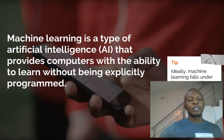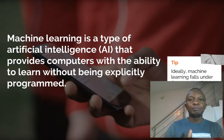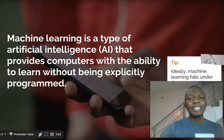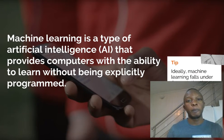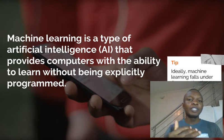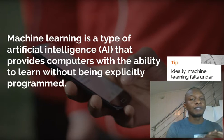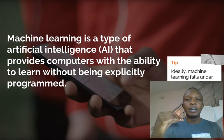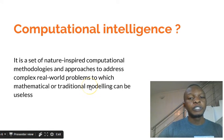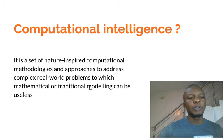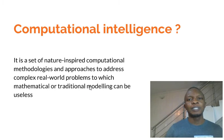The main thing to note in machine learning is that the computer reads data and understands concepts without being explicitly programmed. Machine learning is a soft field in computational intelligence, also called soft computing. Computational intelligence is a soft field directly under artificial intelligence, so machine learning is under computational intelligence, which is under artificial intelligence. Computational intelligence is a set of nature-inspired computational methodologies and approaches to address complex real-world problems to which traditional mathematical modeling can be useless.